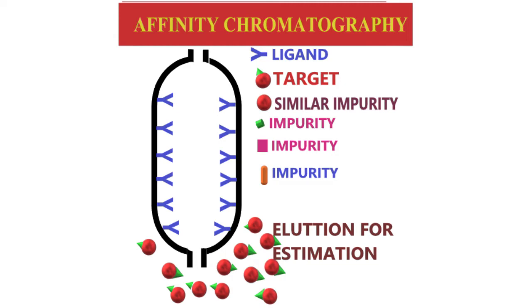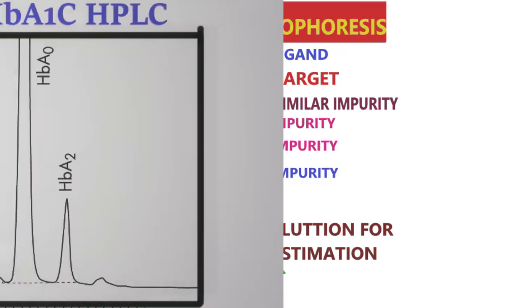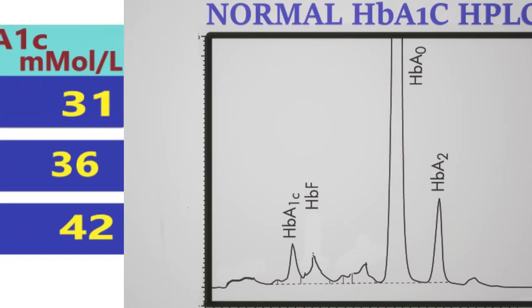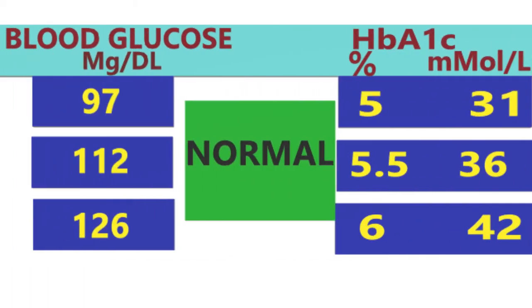The amino acid-based method utilizes an antibody that identifies the N-terminal glycated amino acid. Immunoturbidometry, enzymatic, and point-of-care tests are performed by this method.